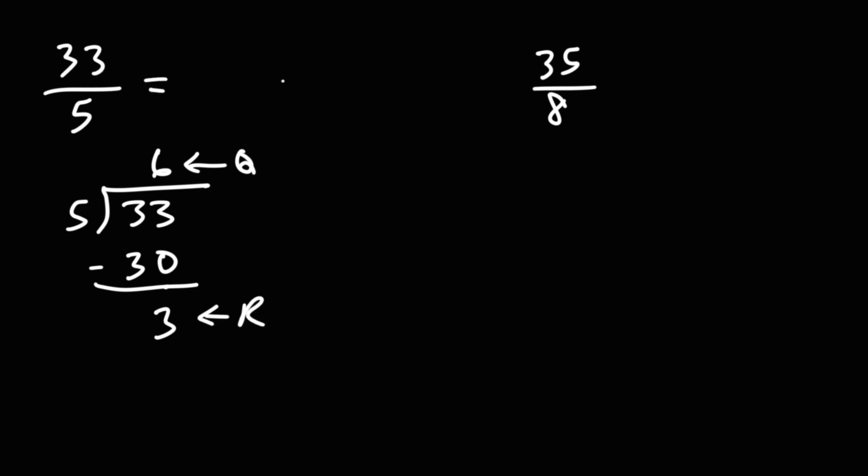To convert the improper fraction to a mixed number, let's keep the denominator the same. The quotient will be the whole number, 6, and the remainder is 3. To check your work, 6 times 5 is 30 plus 3 will give us the numerator 33. So this is the answer for the third example.